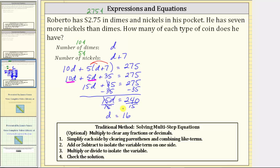Going back to the expressions for the number of dimes and nickels, because d equals 16, we now know Roberto has 16 dimes. And because the number of nickels is d plus seven, the number of nickels is 16 plus seven, which equals 23. So now we know Roberto has 16 dimes and 23 nickels.